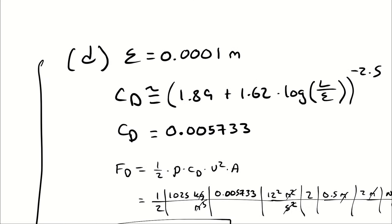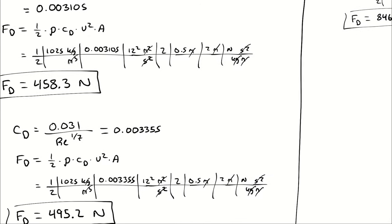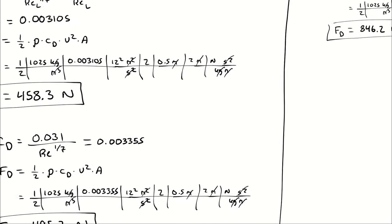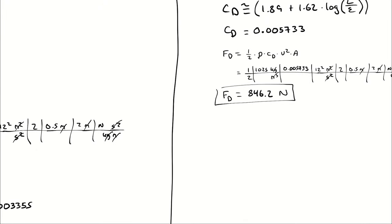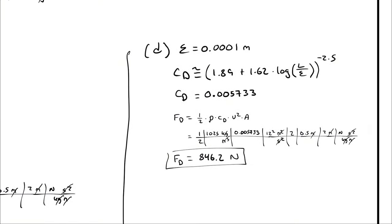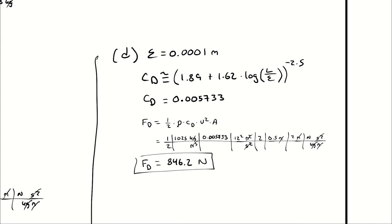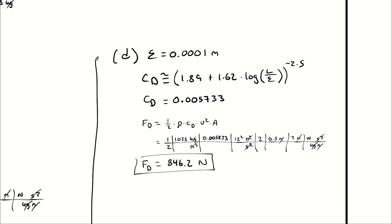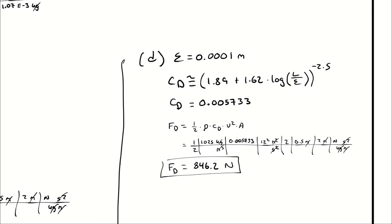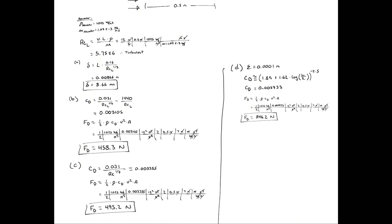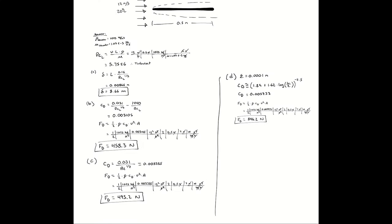So the presence of just a little bit of roughness, bumps that are about a tenth of a millimeter tall on average, increases our drag force from almost 500 Newtons to 850 Newtons. That almost doubles just by having a surface that has bumps that are an average of a tenth of a millimeter tall. So it's in our best interest to try to smooth the surfaces that are dragging against water, especially in applications where our velocity is relatively high.